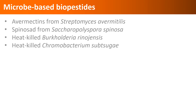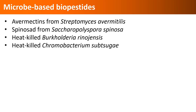Here are some examples of microbe-based pesticides that do not have live organisms. The first two are biological molecules of bacteria produced through fermentation. Both avermectins and spinosad are popular pesticides and successfully used against several pests. The other two are examples of products that contain heat-killed bacteria and their fermentation solids, and are used as feeding deterrents and/or biopesticides.